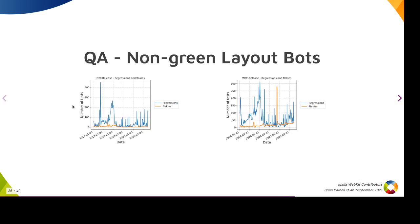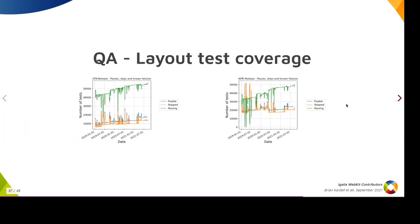Looking at non-green layout bots — one for GTK and one for WPE — these show things that prevent the release from being green. We have had some small regressions in flakiness over 2021, but things are a lot more in control for the release bots than they were before. These charts show the automated layout test coverage is growing — we're passing more tests steadily, which is one of our main goals. This has required more time investment from our side, but we're very happy with the results.